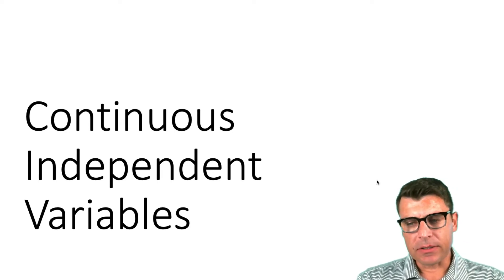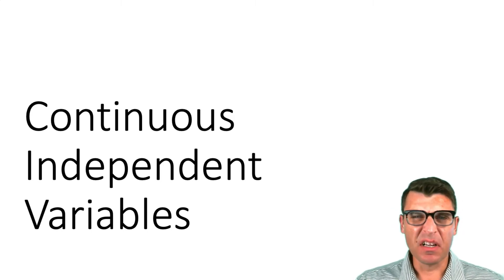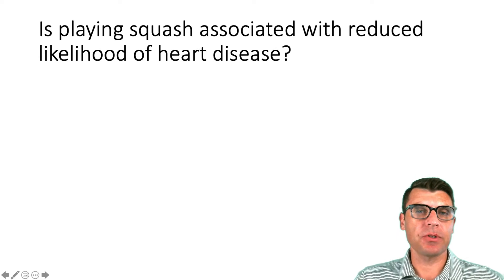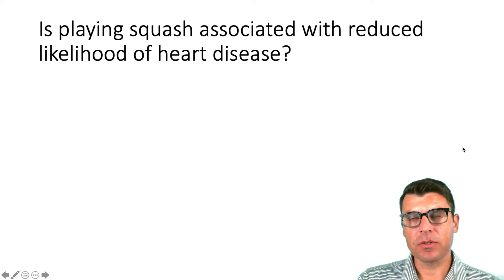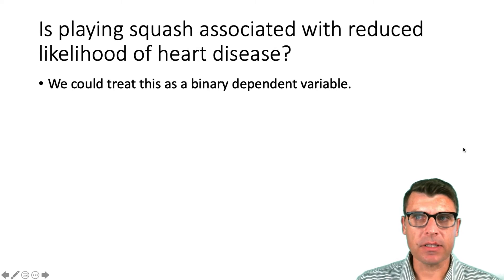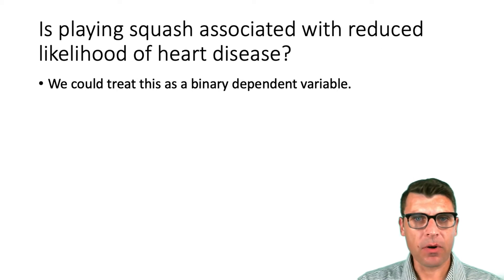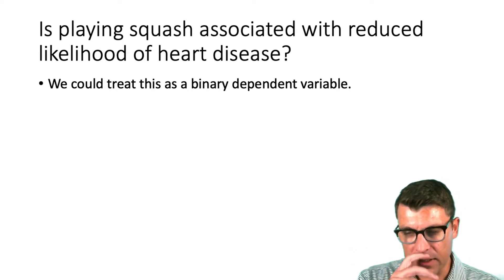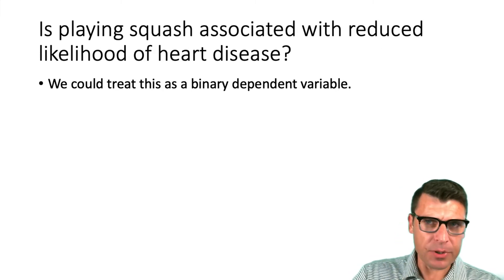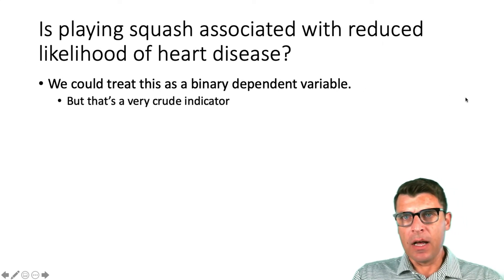Let's imagine we're interested in the relationship between exercise and heart disease. More specifically, we're interested in the relationship between playing squash and the reduced likelihood of heart disease. There are a couple ways we can think about testing this hypothesis. We could treat this as a binary dependent variable — we could go around asking people whether or not they play squash and code that as a zero or one, then track their incidence of heart disease over some period of time.